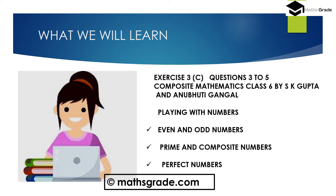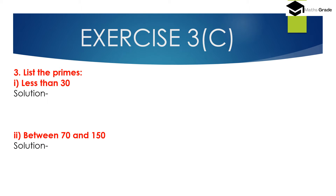Question number 3: list the prime numbers less than 30. A prime number is the number which is divisible by 1 and itself. A prime number has exactly two factors: the number 1 and the number itself.